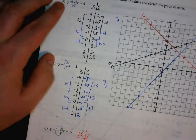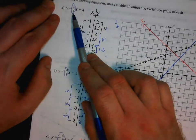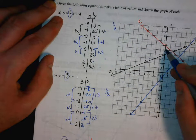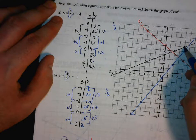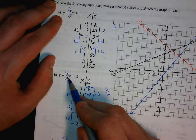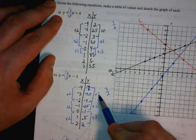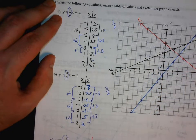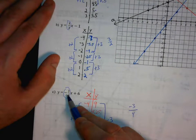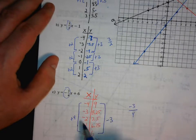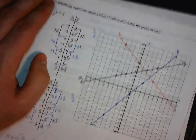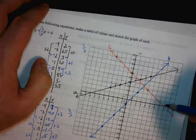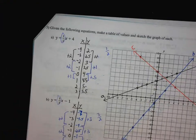We also had examples with different rates of change, or different coefficients for x — different slopes. When the slope was 1 half, we went up 1 for y to the right 2 for x. If the slope was 3 halves, we went up 3 to the right 2. For negative 3 fourths, the y value goes down by 3 whenever x went up by 4 — count down 3 and to the right 4 — and each of those are in y equals mx plus b form.